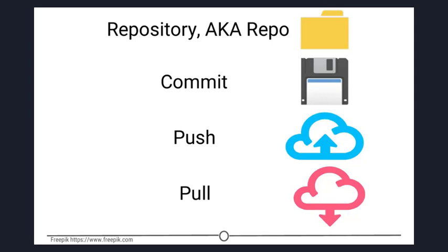Pull is to update your local version of the repository to the current version. Since others may have edited in the meanwhile — the shared repository is hosted online and any of your collaborators or even yourself on a different computer could have made changes to the files and then pushed them to the shared repository — you may be behind the times. The files you have locally on your computer may be outdated, so you pull to check if you are up to date with the main repository.